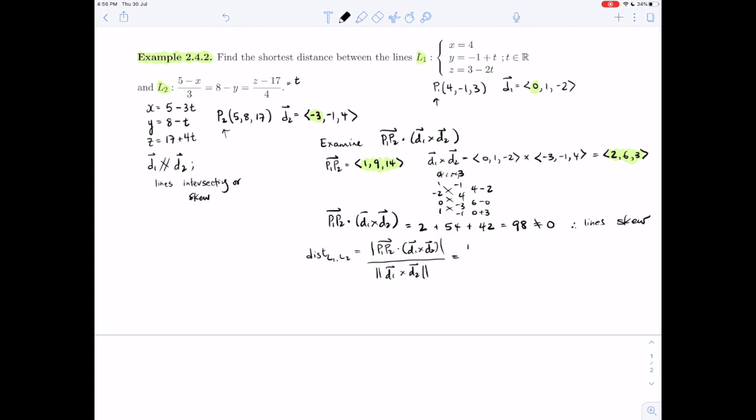So that means it's the absolute value of 98 divided by the square root of, and so I can take the components here, 2 squared plus 6 squared plus 3 squared. So absolute value of 98 is 98, square root of 49 is 7. 98 divided by 7 is 14. The lines are skew, and the minimum distance is 14 units between them.